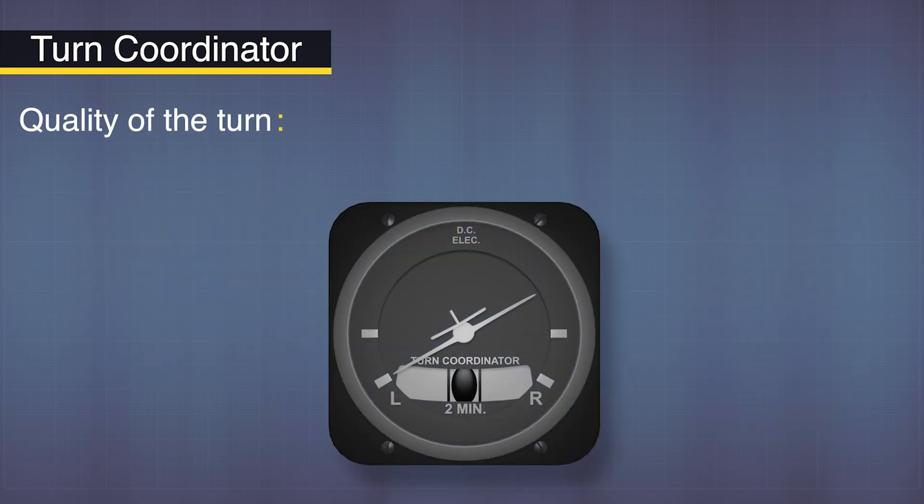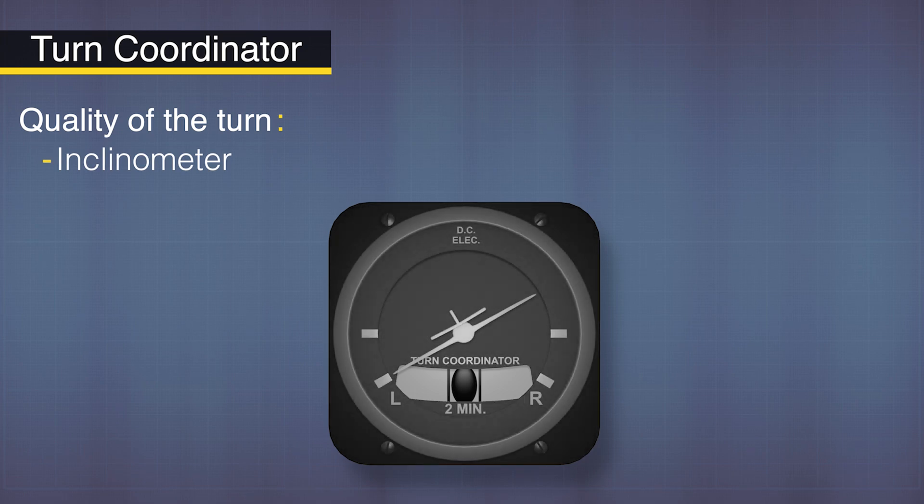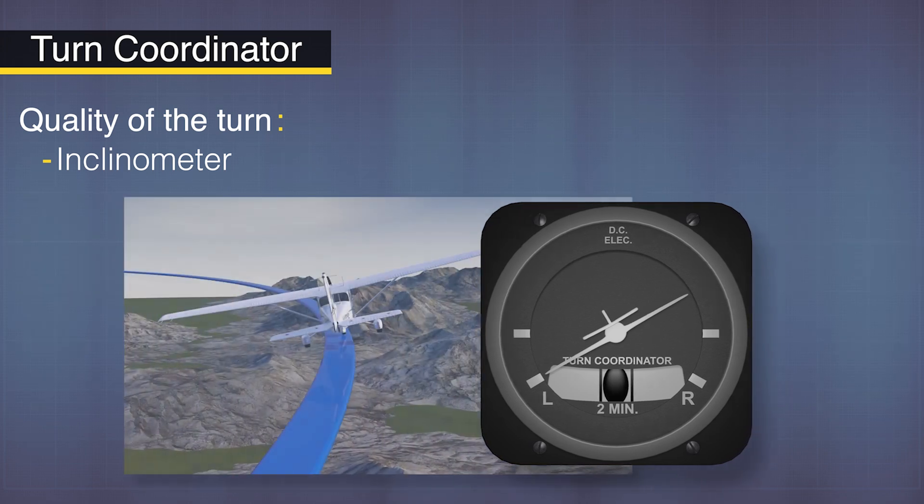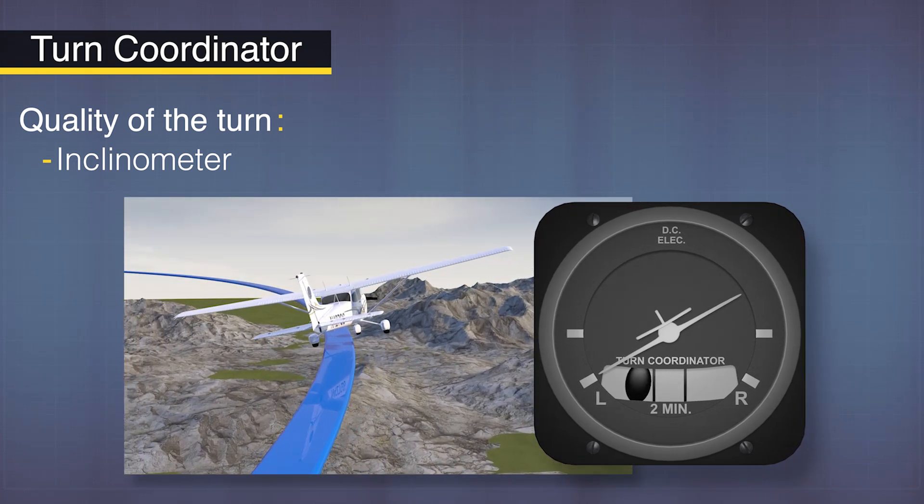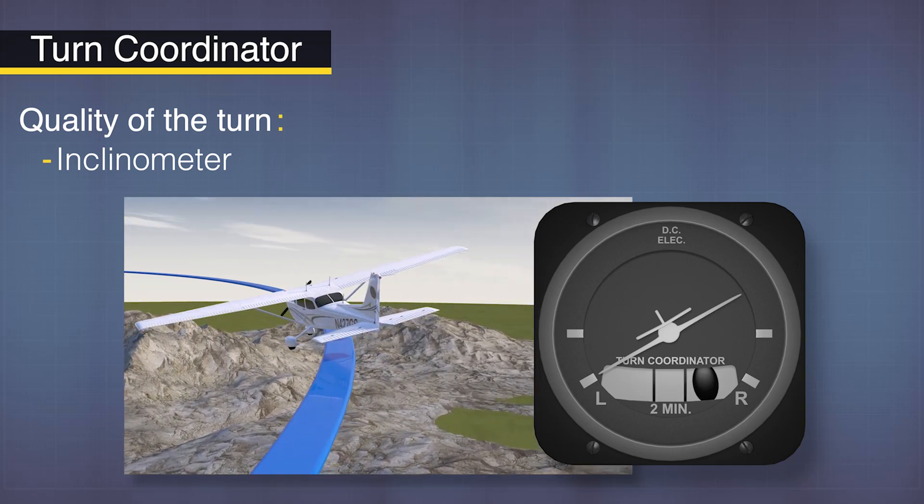For the quality of the turn, we reference the inclinometer built into the turn coordinator. This is the fancy name for the little floating ball in the little glass tube. If the ball moves inside the turn, it's considered a slipping turn. In a skidding turn, the ball is pushed outside the turn, usually from applying too much rudder, which kicks the tail outside the turn.